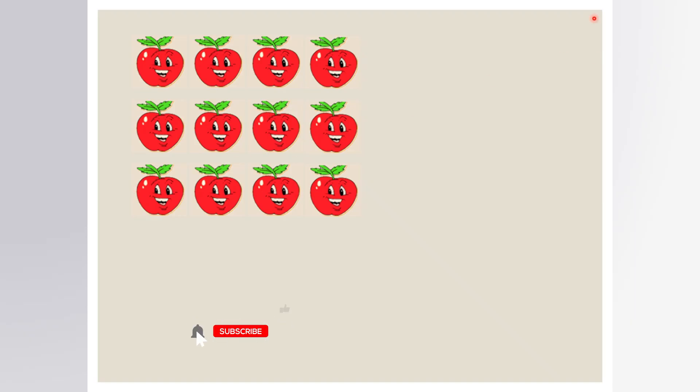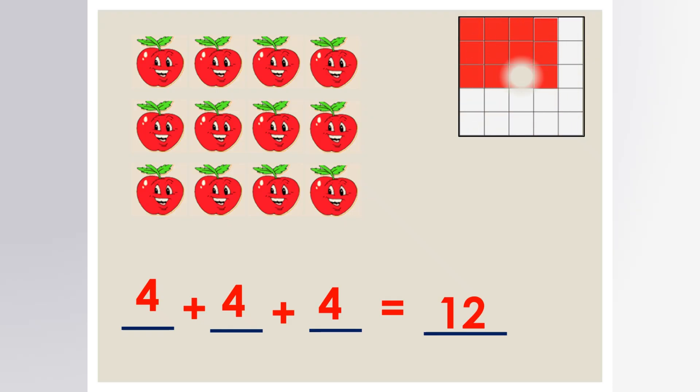It means we add four repeatedly three times. Four plus four plus four. Four plus four is eight. Eight plus four is twelve. So we say that we have three rows of four.